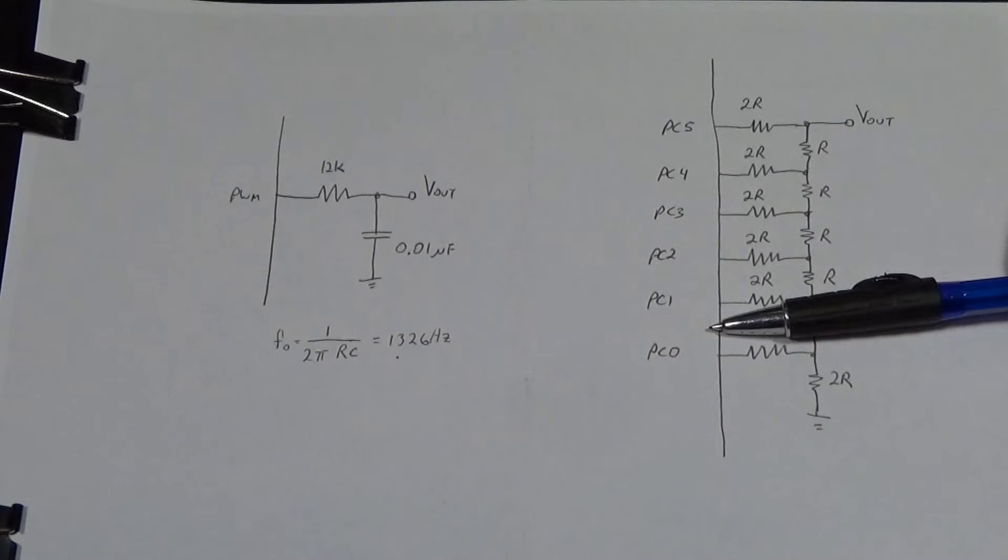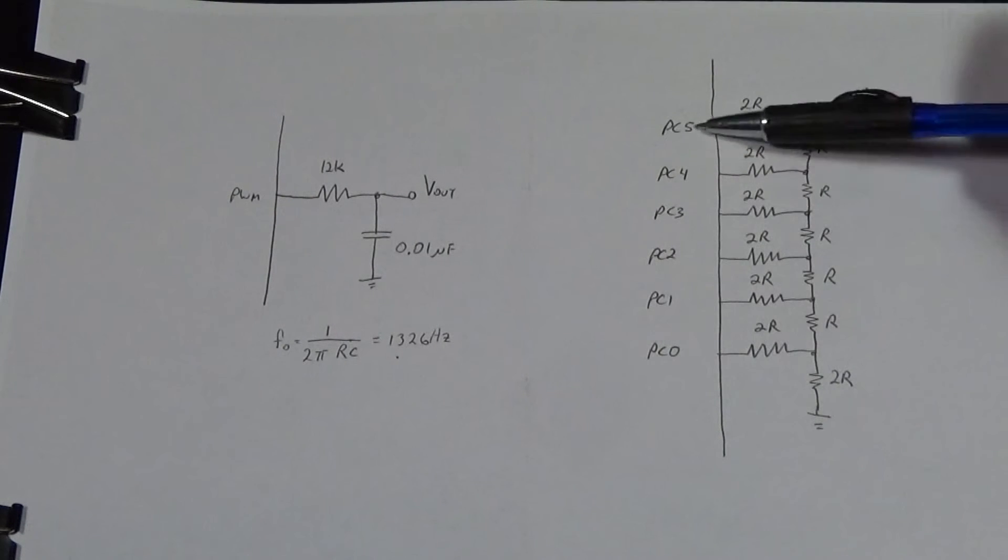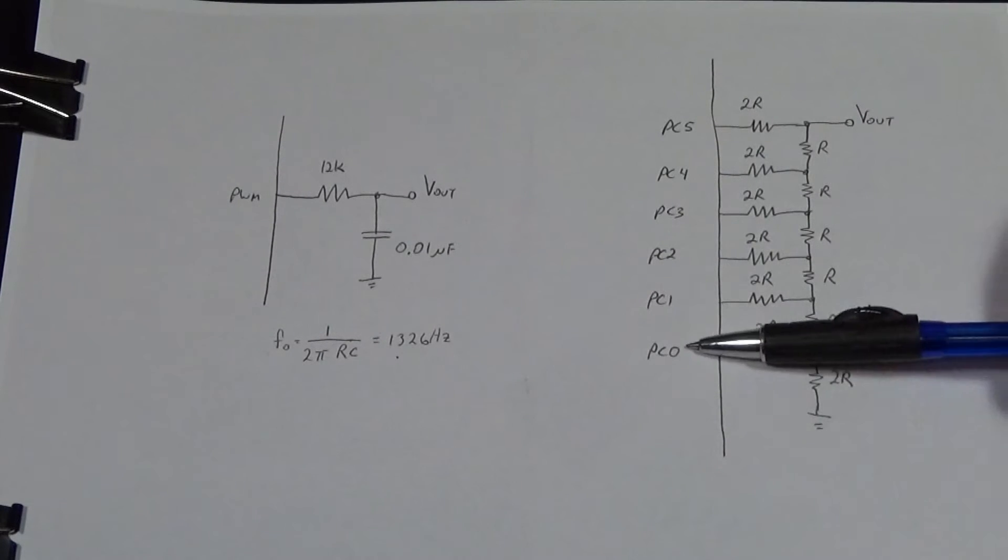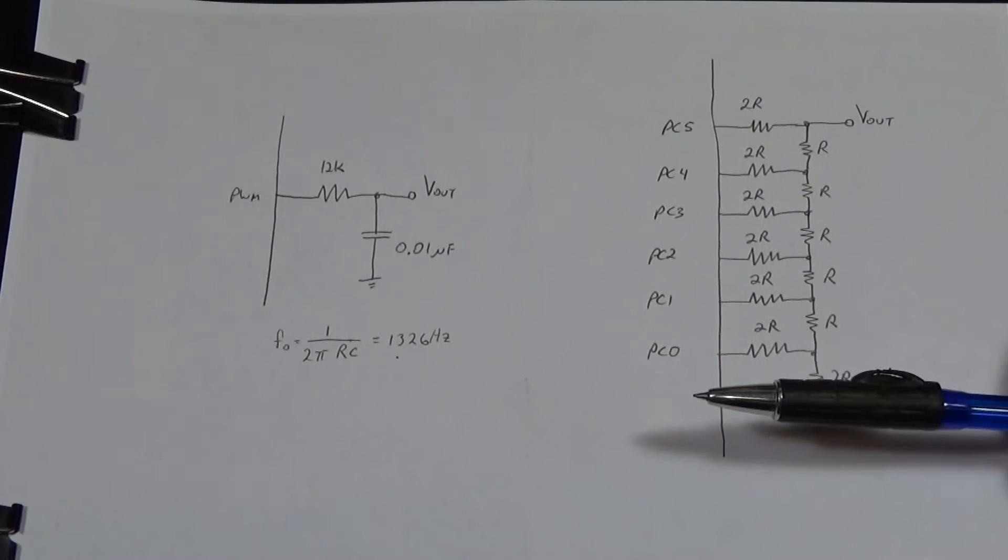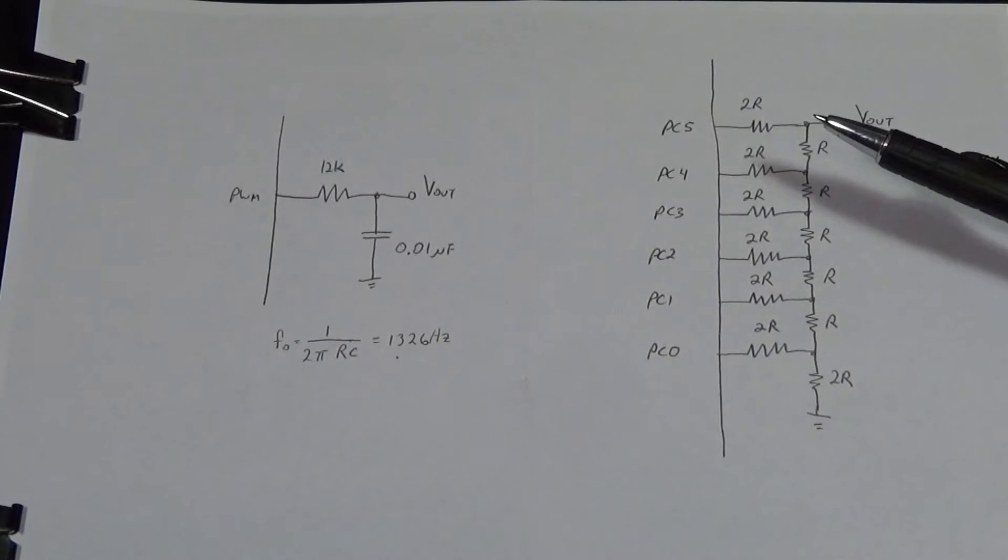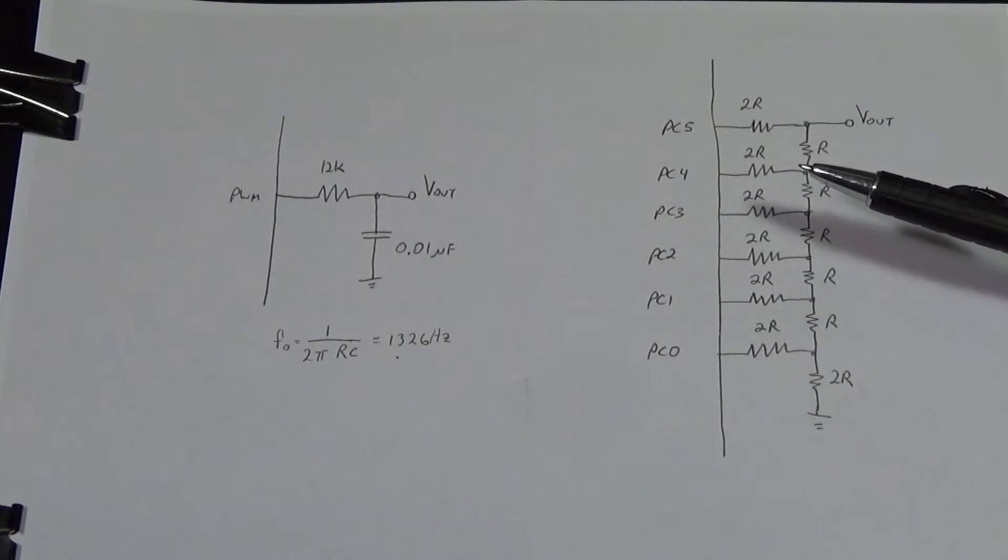And so what I'm doing in the software which is the other modification I made was I take the value that I've read from the sine table and I just shoot it out the port. Actually I end up shifting it to the right two positions to knock off the lower two bits, the least significant bits and then putting the upper six bits into the I.O. port here.